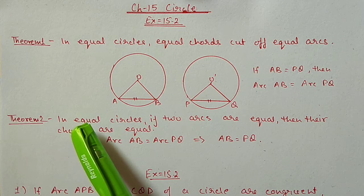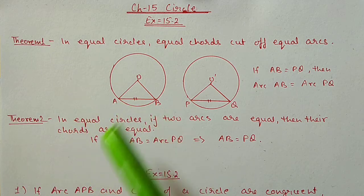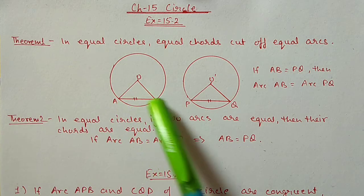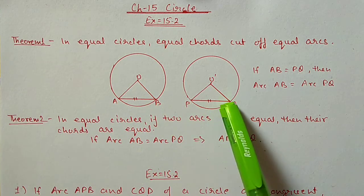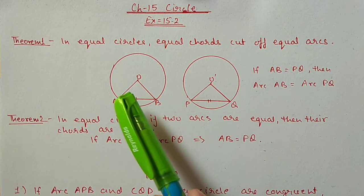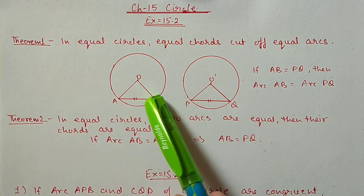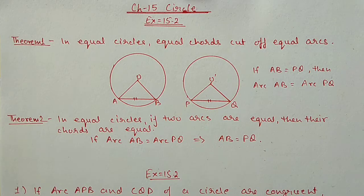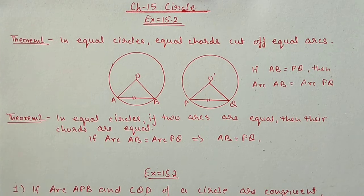The second theorem is the reverse of this theorem. If two arcs are equal for a circle or for equal circles, then the two chords AB and PQ will also be equal. With the help of these two theorems, we will solve this exercise.